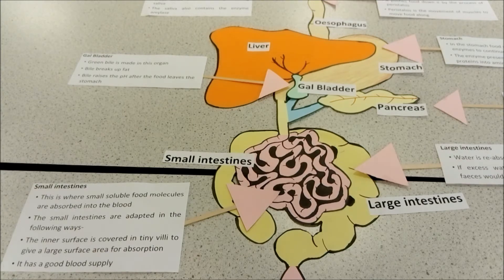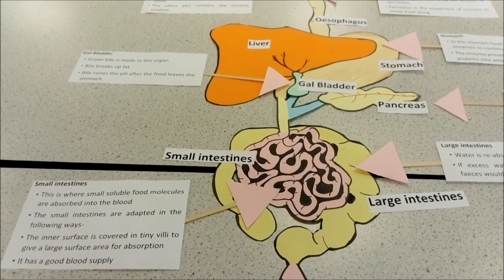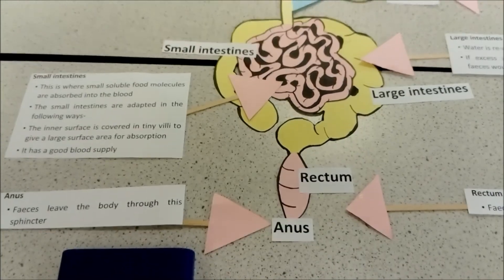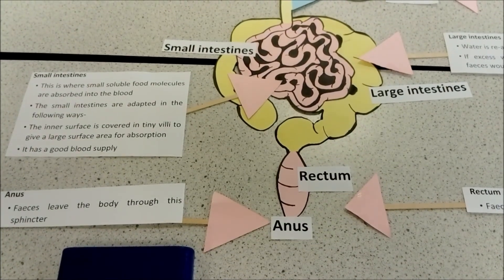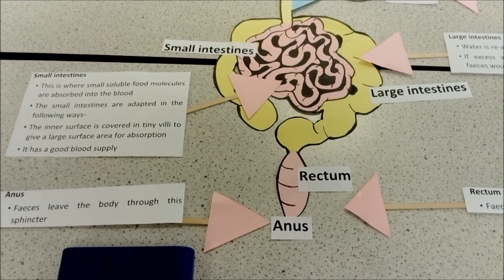After the small intestines, the food enters the large intestines, where excess water is reabsorbed. After the large intestines, the food — or the feces that is left over — collects in the rectum before being expelled through the anus.